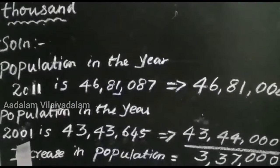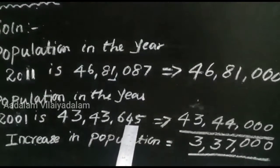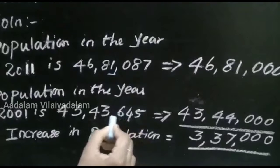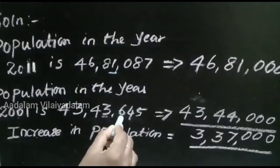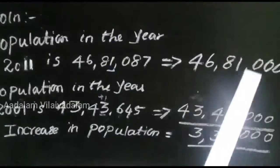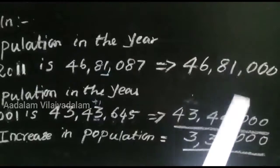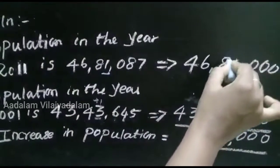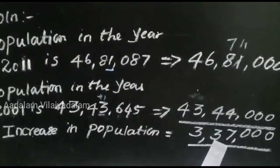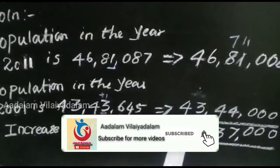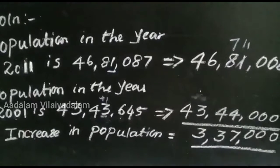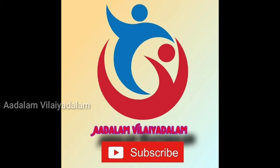For 2001 population: 43,643,645. Round off to nearest 1,000. Identify the 1,000 place: 1, 10, 100, 1000. The next digit is 6, which is greater than 5, so add one number. The estimate value is 43,044,000. Now subtract: 46,081,000 minus 43,044,000. Borrowing as needed: 11 minus 4 is 7, 7 minus 4 is 3, 6 minus 3 is 3, 4 minus 4 is 0. The increase in population is 3,037,000.